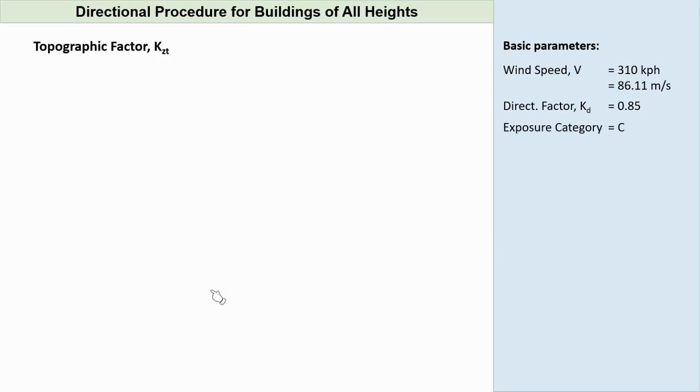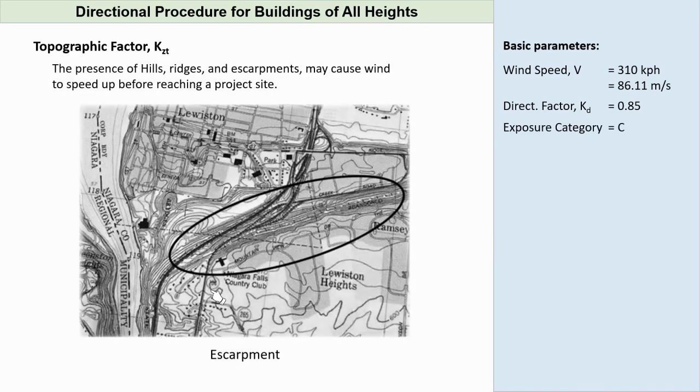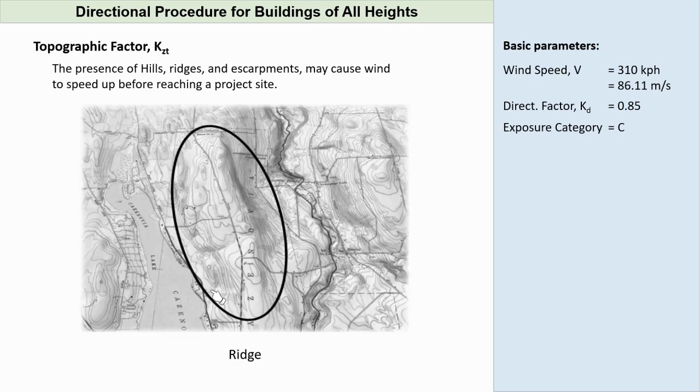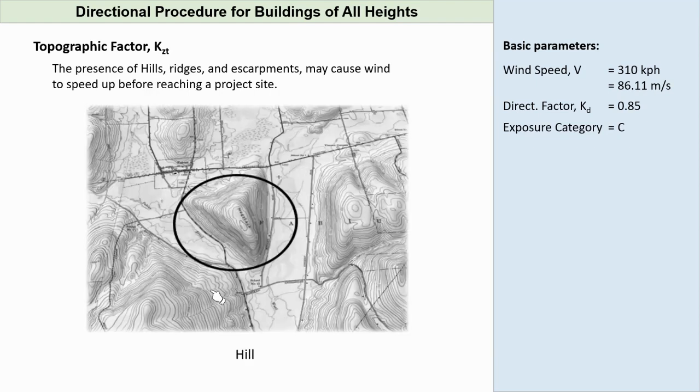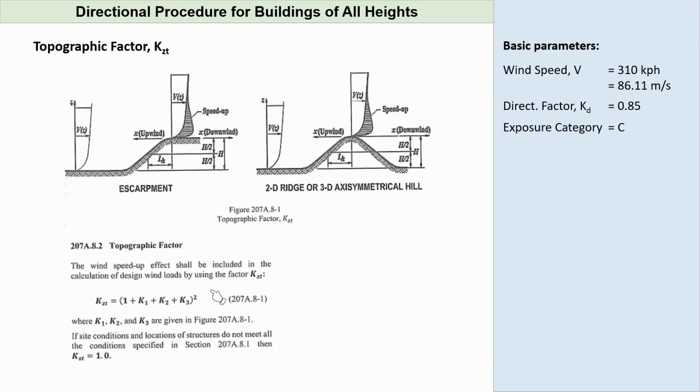Topographic factor, KZT. The presence of hills, ridges, and escarpments may cause wind to speed up before reaching a project site. Escarpment is a cliff or steep slope, generally separating two levels or gently sloping areas. Ridge is an elongated crest of hill, characterized by strong relief in two directions. Hill is a land surface characterized by strong relief in any horizontal direction. The code provides detailed calculation on how to calculate the value of KZT considering the topography. In our case, we have a generally flat land and therefore KZT can be taken as equal to 1.